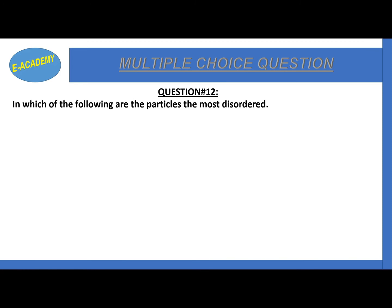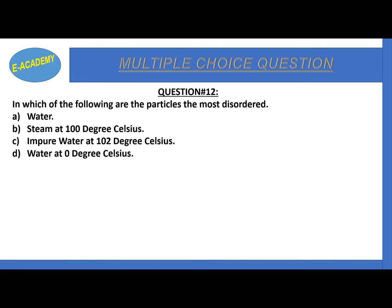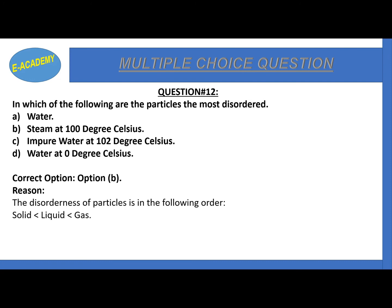Question number 12: in which of the following are particles the most disordered - water, steam at 100°C, impure water at 102°C, or water at 0°C? The correct option is B - steam at 100°C. As the state of matter changes from solid to gas, solids have the most orderness, liquids have more disorderness, and gases have the most disorderness. So steam, being a gas, has the most disorderness.